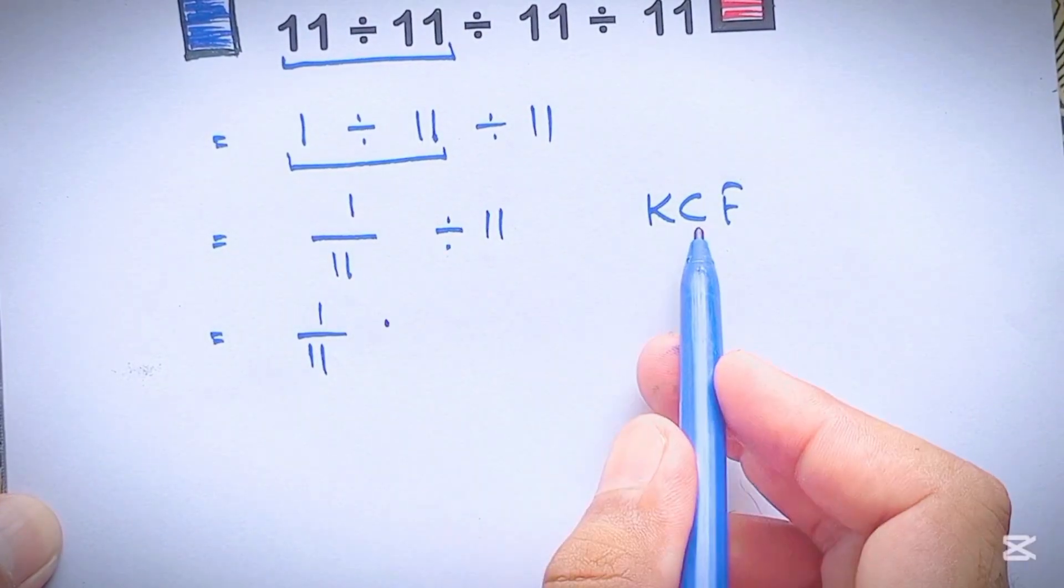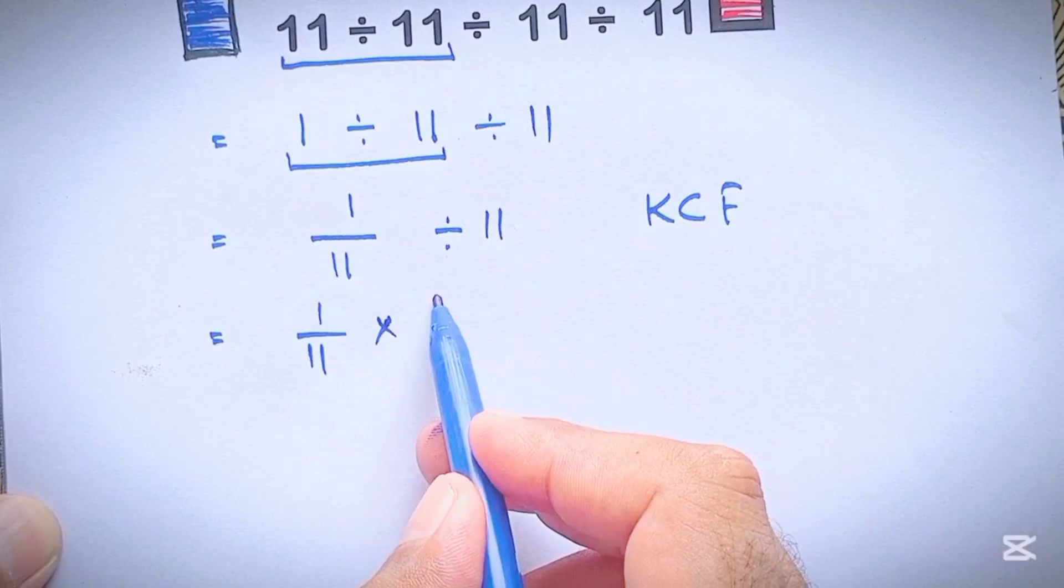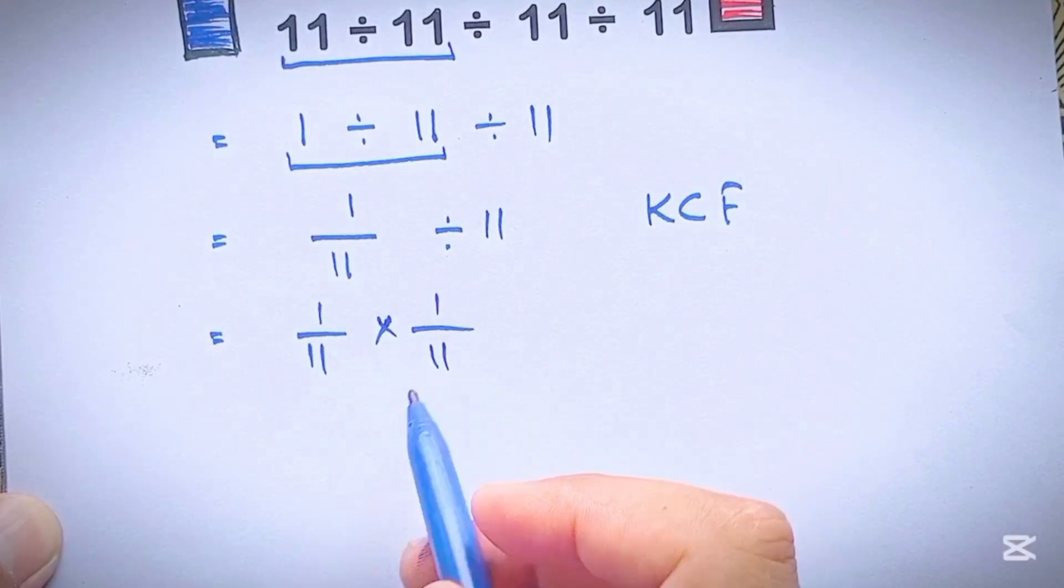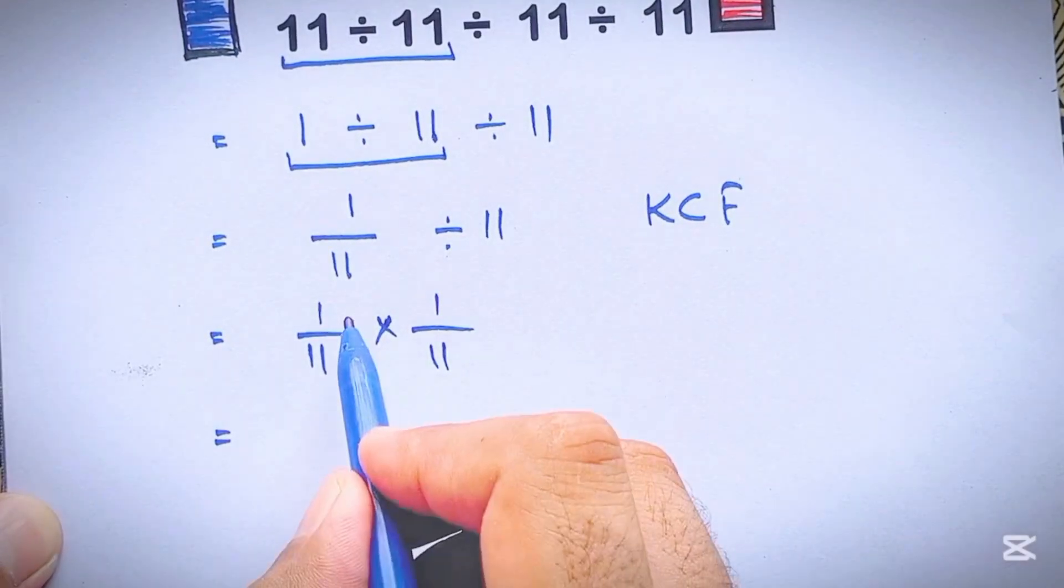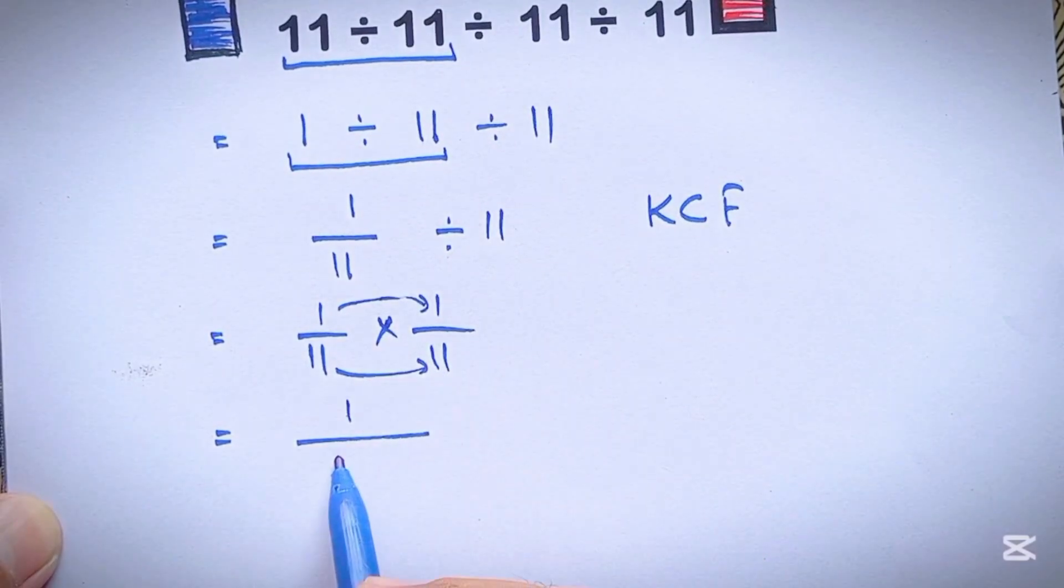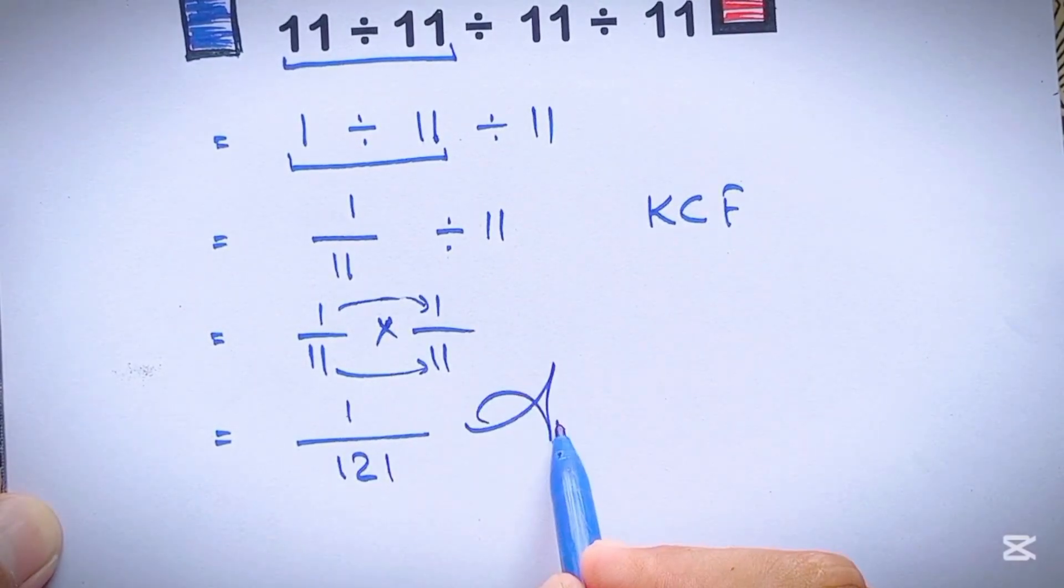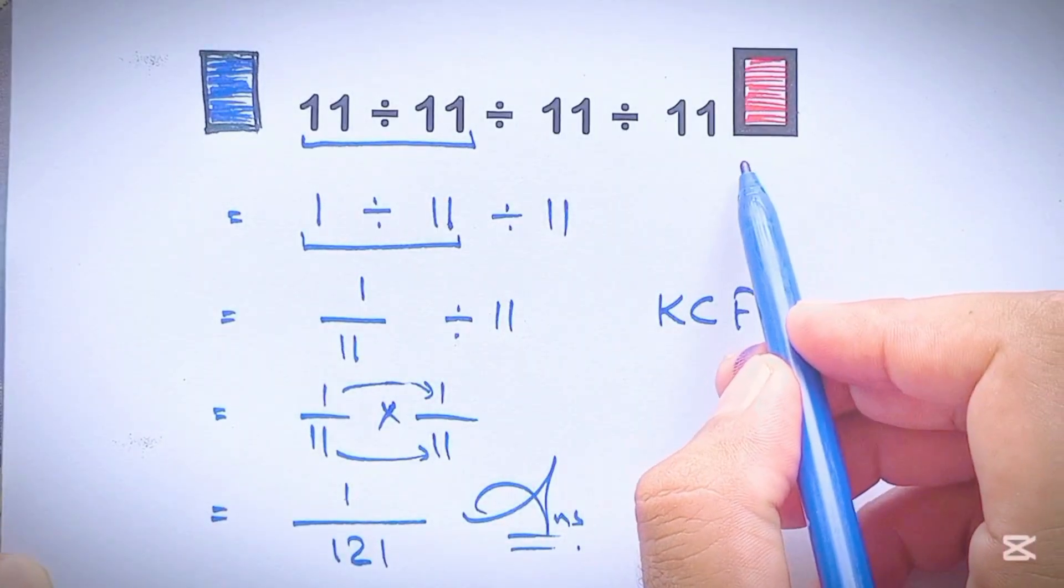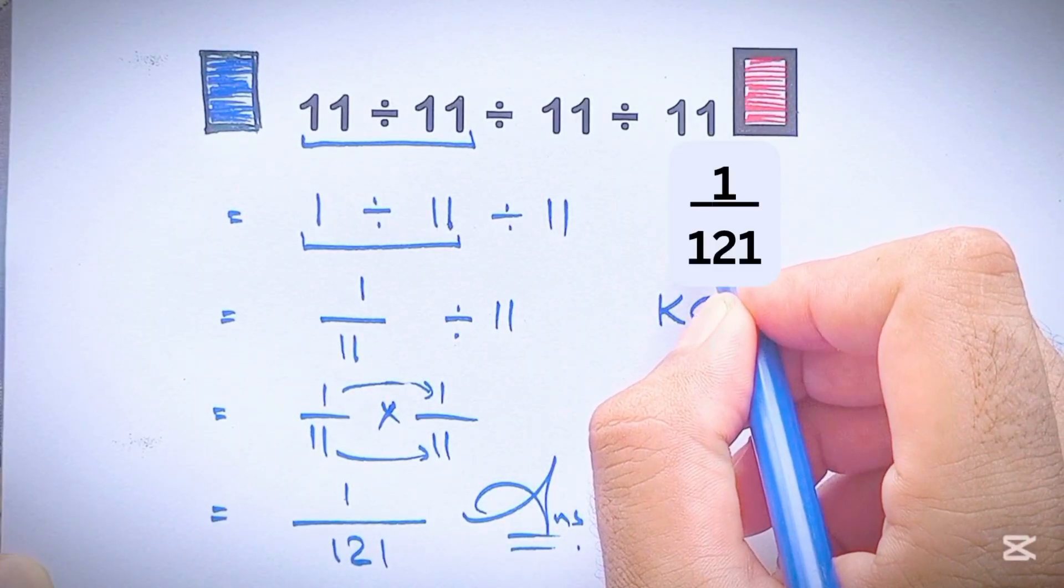So we can write 1 over 11, then times 1 over 11. And this is equal to 1 times 1, which gives us 1. And 11 times 11 equals 121. Final answer to this problem is just 1 over 121.